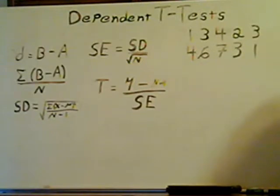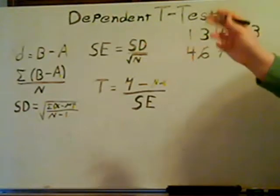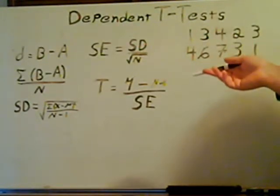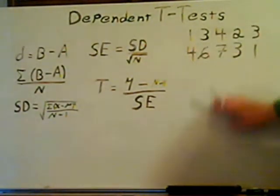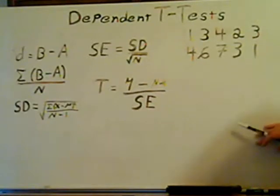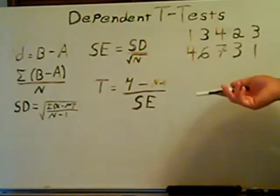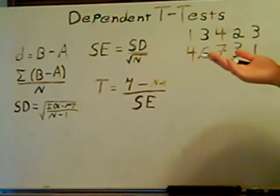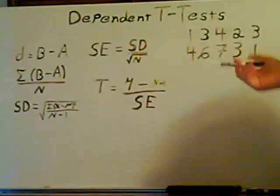Next, you'll need to get the standard deviation. To do that, it's the square root of sigma (X minus mu) squared divided by N minus one. You'll have to compute X, X minus the mean, and X minus the mean squared — which we've covered before. When you do that, you find that the sigma of (X minus mu) squared is 19.2, and N minus one is four. When you divide that and take the square root, your standard deviation is 2.19.